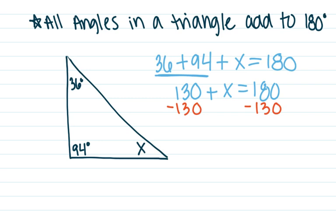Now I have a fairly simple equation. I just subtract 130 from both sides, and I'm left with x equals 50 degrees. So that missing angle is 50 degrees. I can add all the angles together, make this equation, and solve it to find that missing angle.